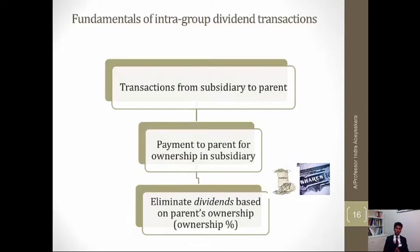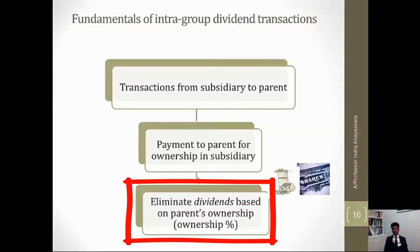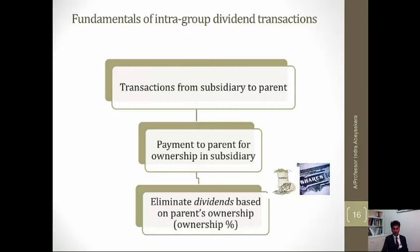One of the differences here, when we compare with the inter-group transactions relating to services, inventory, and non-current assets, is that they are buy-and-sell transactions. The dividend transactions are based on ownership. Therefore, the percentage of ownership matters. In the previous types of transactions, the percentage of ownership was disregarded and they were eliminated in full. But here, the dividends are paid based on the percentage of ownership, and the basis of elimination or reversion of transaction is based on the percentage of ownership.